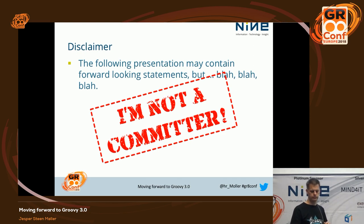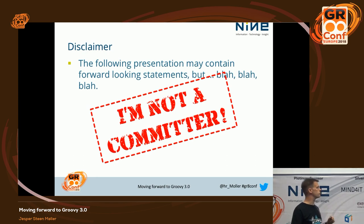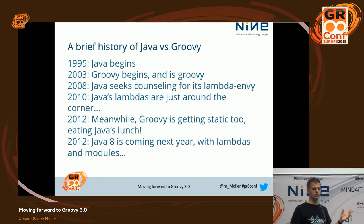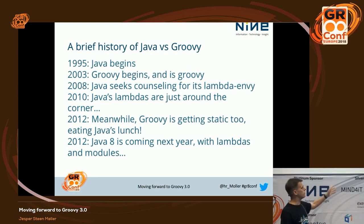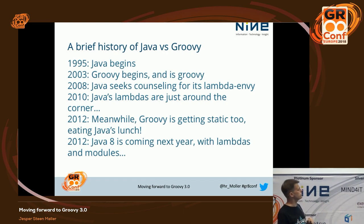From here on, I'd like to give a little historical background. Way back, 1995, Java begins. 2003, the official Groovy begins — it's obviously a Groovy solution to things.